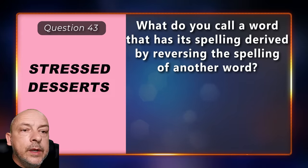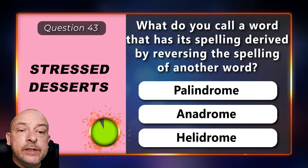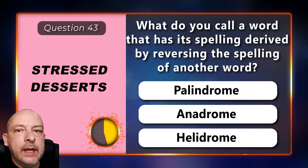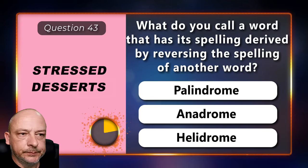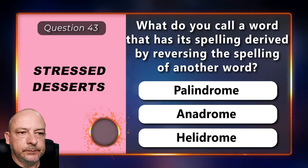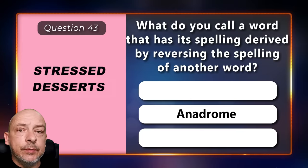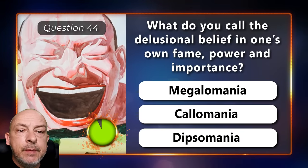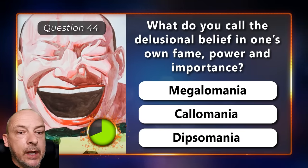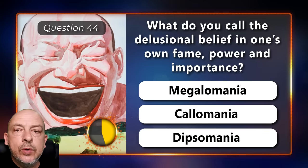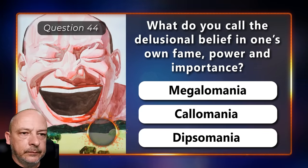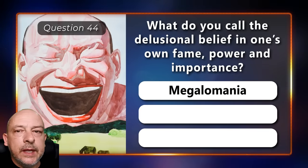What do you call a word that has its spelling derived by reversing the spelling of another word — a palindrome, an anadrome, or a helidrome? It is an anadrome. What do you call the delusional belief in one's own fame, power, and importance — megalomania, calomania, or dipsomania? It is megalomania.